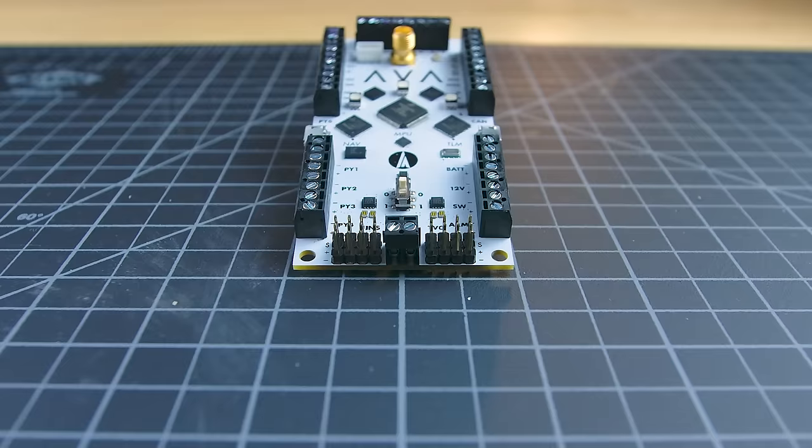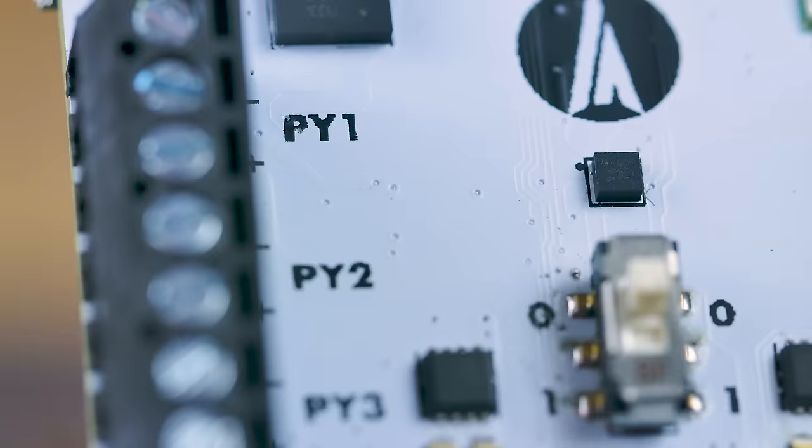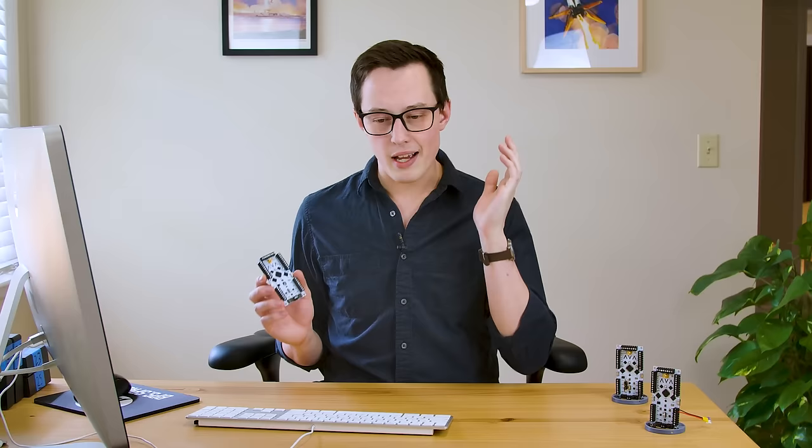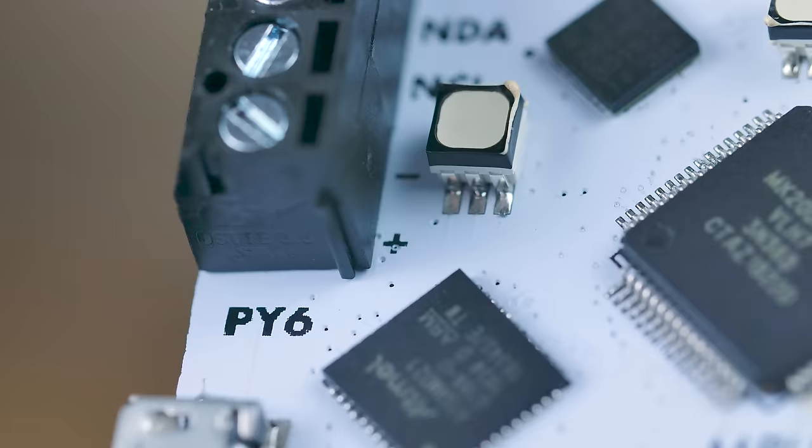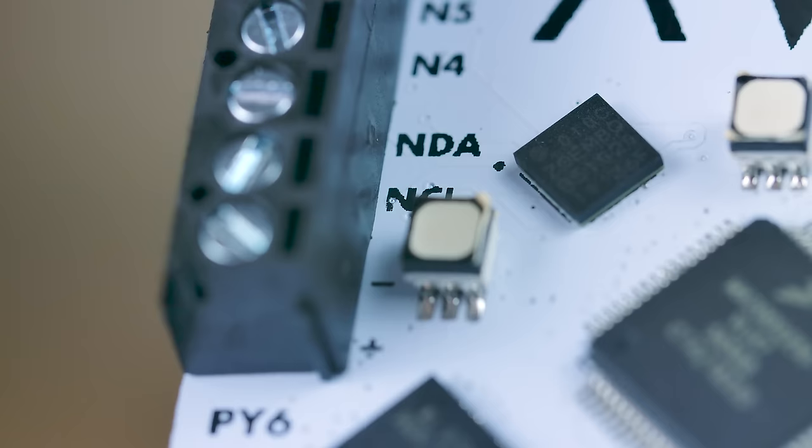Now, there are six total pyro channels, but on the left we have the four main channels. Each one of these channels can comfortably sit at five amps of current, and has continuity sensing to ensure that charges are connected and ready to fire. Although most charges I fly are bi-directional, I do like to label the positive and negative terminals here. I feel like it's a good idea, no matter what, to always label which direction current is flowing.